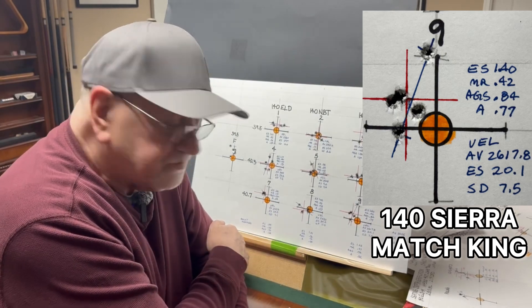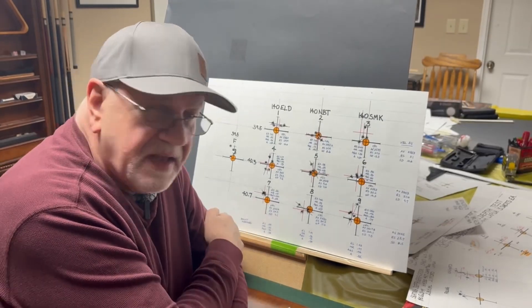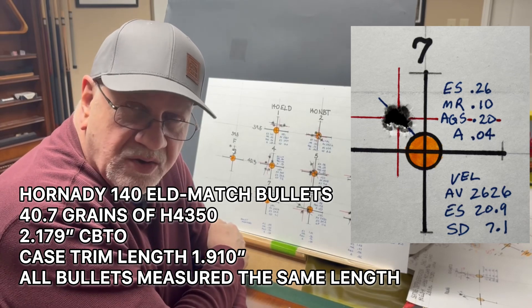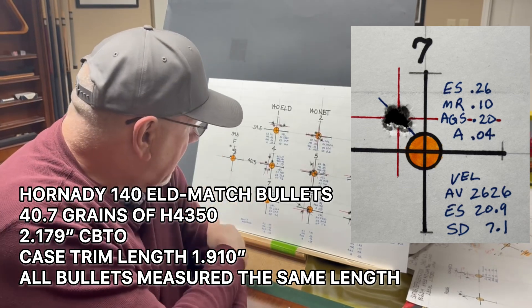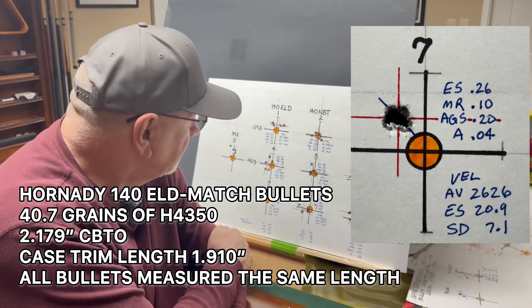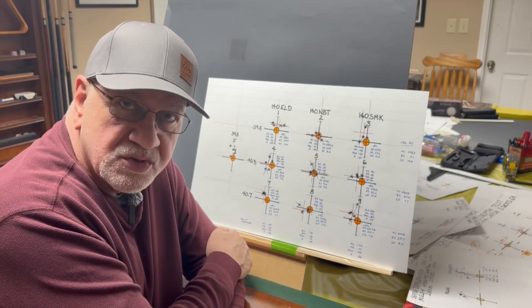I may have to look into those and do a little experimenting there. But that's the process. That's how I got to the 40.7 grains and the 140 grain ELD match. That one seems to be a winner. So, I will probably continue to practice with that particular round. And we will continue to develop these and look at some higher charge weights as well.